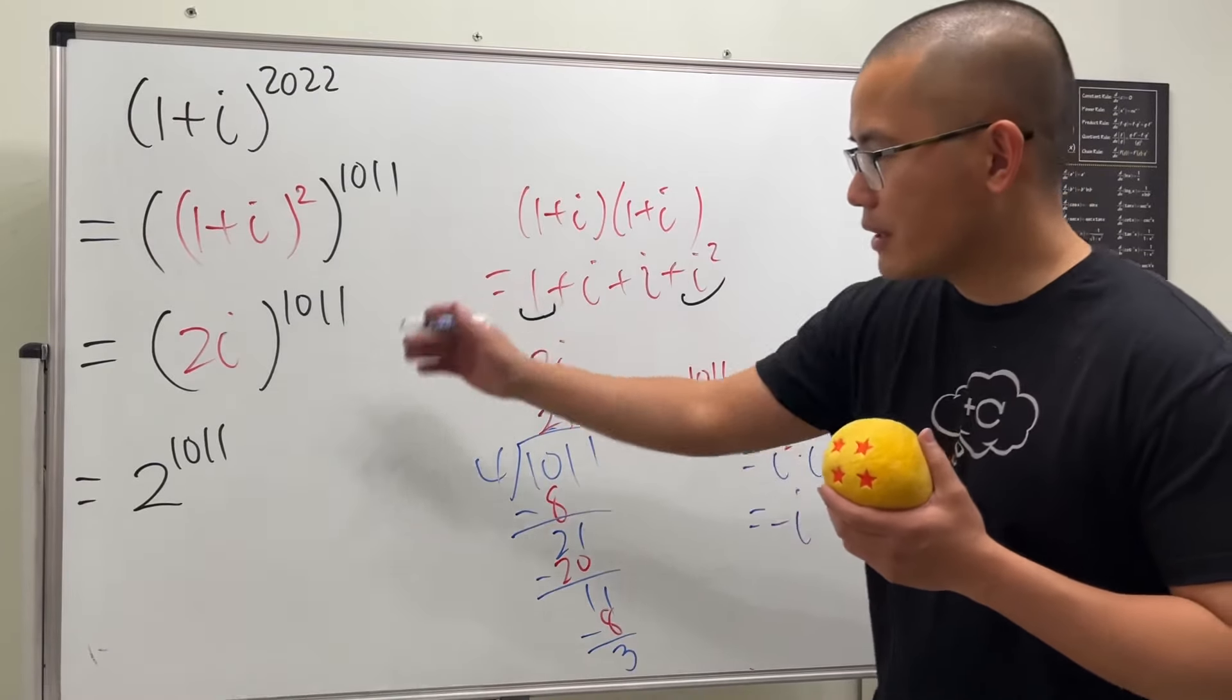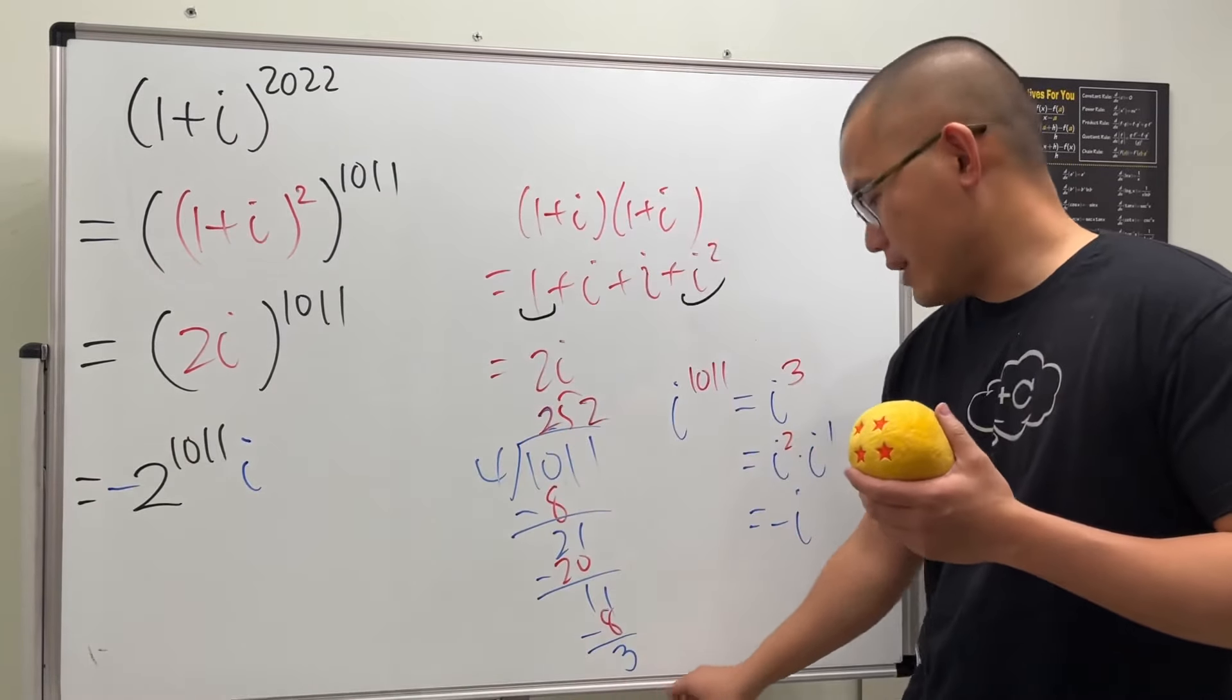So altogether we can just compare here and then just put a negative here and then i here, and then guess what? Yeah, that's the answer.